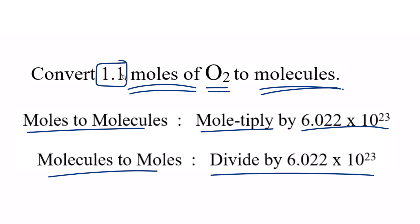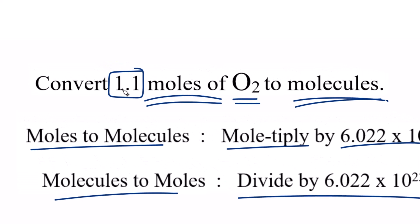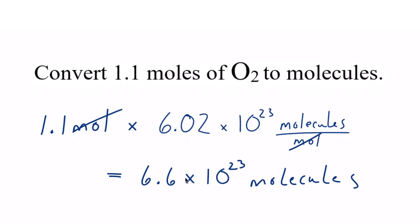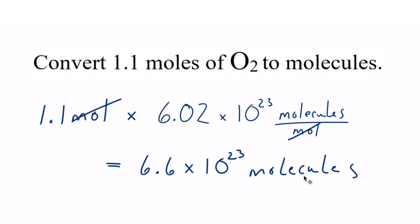So let's multiply 1.1 times Avogadro's number. And note that Avogadro's number, we say that we have 6.02 times 10 to the 23rd molecules in one mole. This way, we multiply moles, and then we divide. The moles are going to cancel out. We have those on the top and the bottom. That gives us 6.6 times 10 to the 23rd molecules of O2.